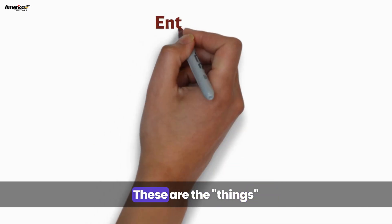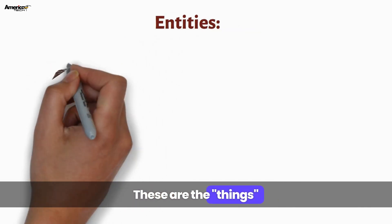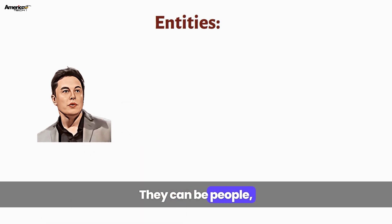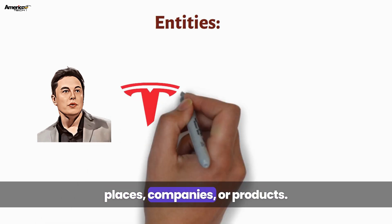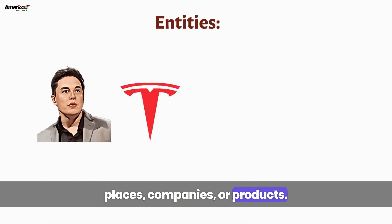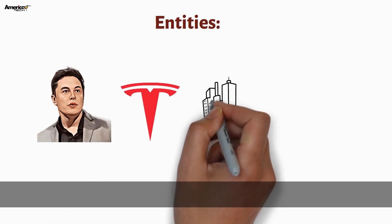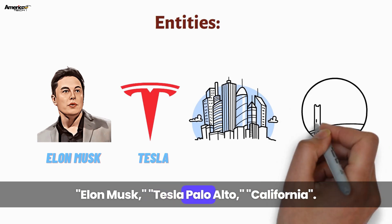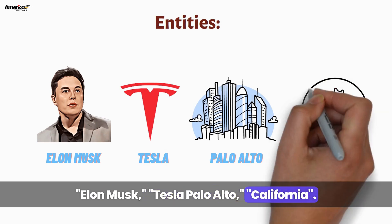Entities — these are the things we're talking about. They can be people, places, companies, or products. For example: Elon Musk, Tesla, Palo Alto, California.